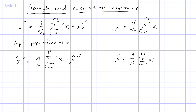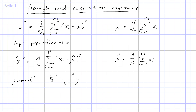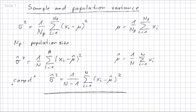However, if we look up a textbook we find a different formula for the sample variance. The correct version uses 1 over n minus 1 instead of 1 over n — that is, instead of dividing by the sample size we divide by n minus 1, which makes sigma hat squared larger.